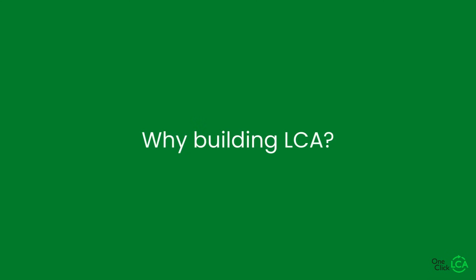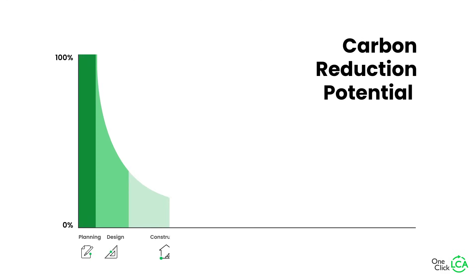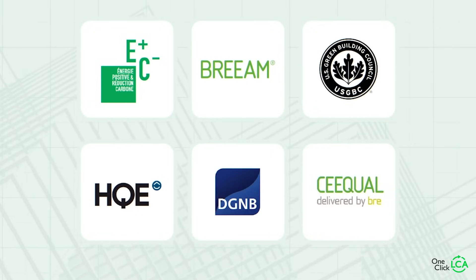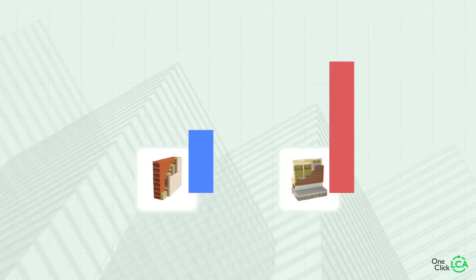There are several benefits to performing a building life cycle assessment. The most significant is that it helps you reduce your project's environmental impacts. Doing an LCA early in the design can provide insights to cut embodied carbon before construction even begins. It can also help you earn credits in certification schemes like BREEAM or LEED, and comply with whole life carbon and scope 3 GHG reporting requirements. Additionally, it can help you create cost-efficient benchmarks, improve transparency, and more.